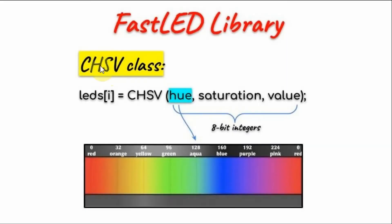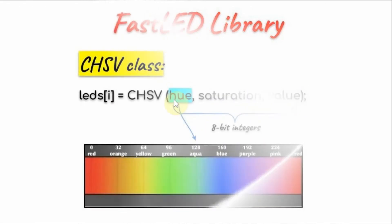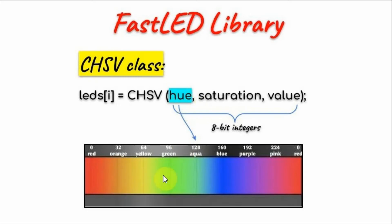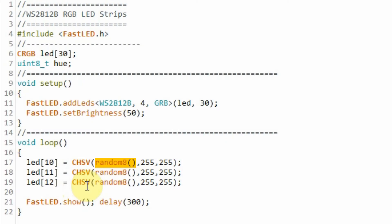We can also set the color of the LEDs using the CHSV class. To set the ith element color, we use this C++ statement. Looking at the arguments, we have hue, saturation, and value, which are all 8-bit integers. The value of hue can be chosen by referring to the color chart — for example, to set the color to blue, the value would be 160. Saturation refers to the saturation level of hue, where 255 is maximum saturation. Value is the brightness level, and 255 is maximum brightness.